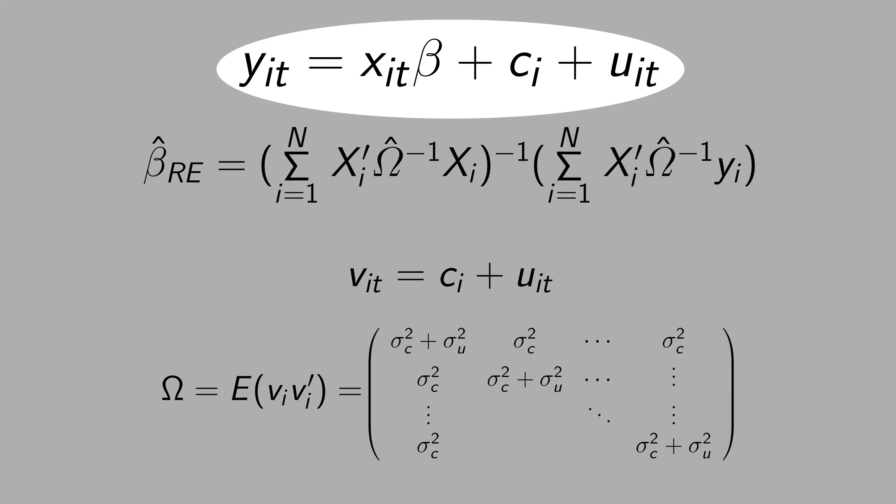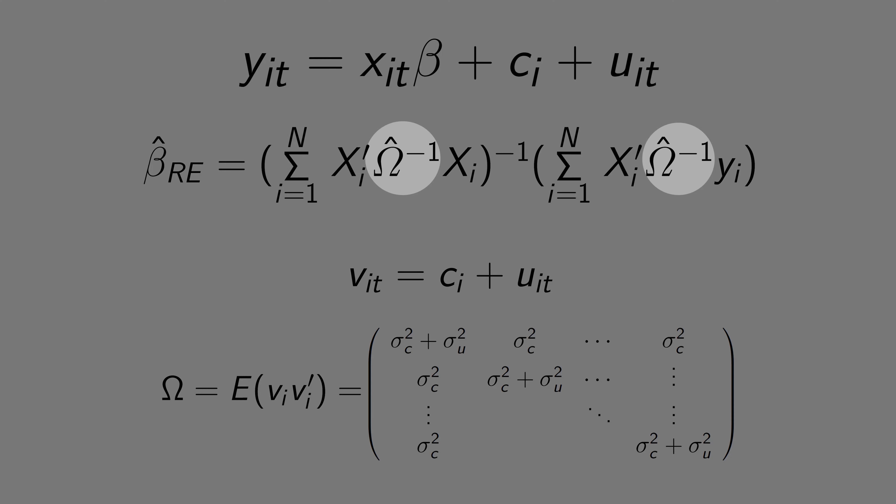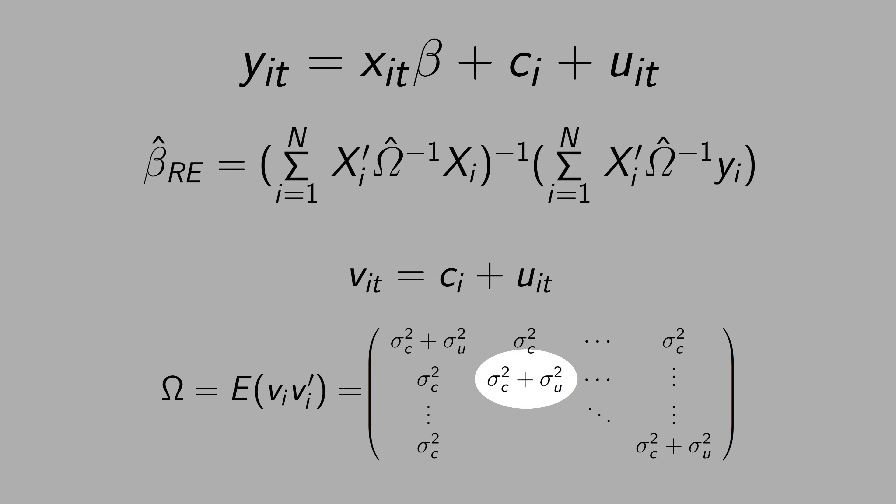Note that if you run ordinary square in this equation here, you are telling the computer to put the identity matrix in the place of omega. You are telling the computer that the diagonals are one, and the off-diagonals, you have all zeros.